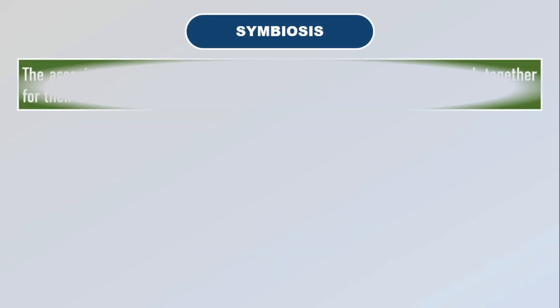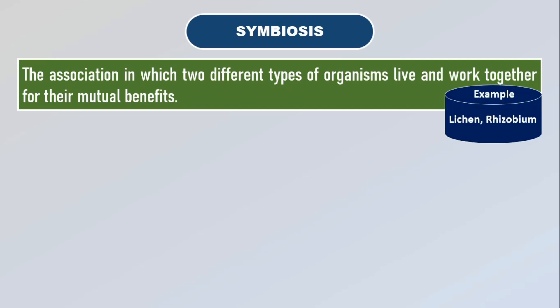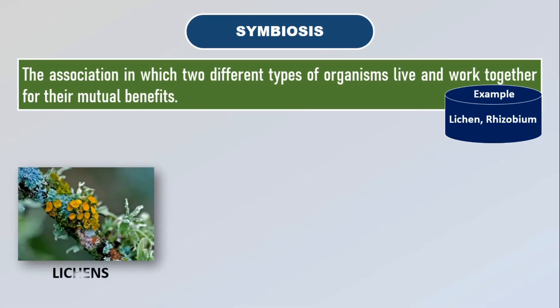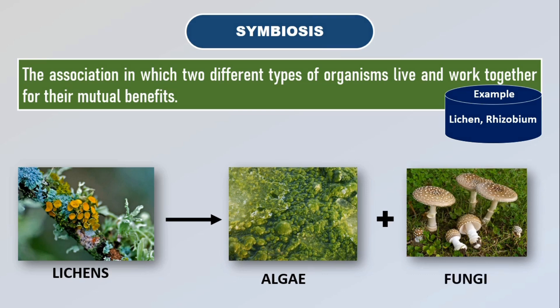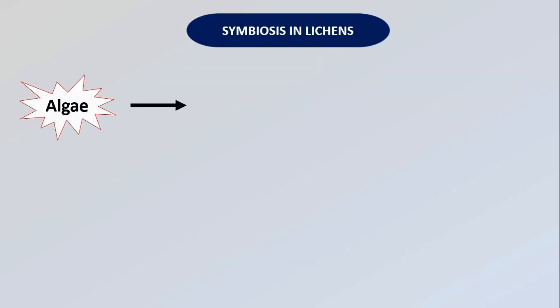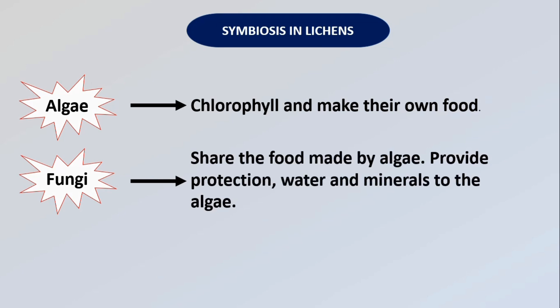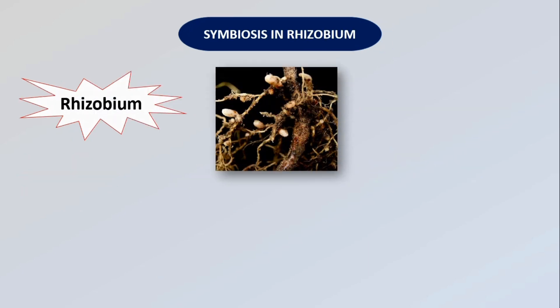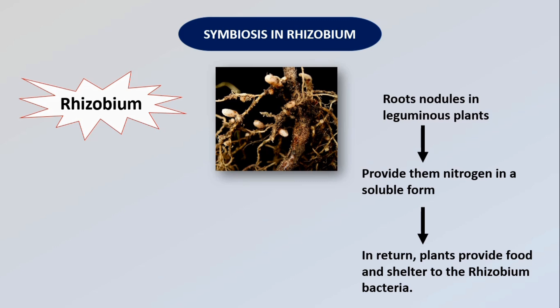Symbiosis is the association in which two different types of organisms live and work together for their mutual benefits. Lichens and rhizobium show symbiotic relationship. A lichen is composed of two distinct organisms: algae and fungi which live and work together. The algae contains chlorophyll and makes its own food, and the fungi shares the food. The fungi provides protection, water and minerals to the algae. Similarly, rhizobium bacteria live in the nodules of roots of leguminous plants like pea and gram and provide them nitrogen in soluble form. In return, the plants provide food and shelter to the rhizobium bacteria.